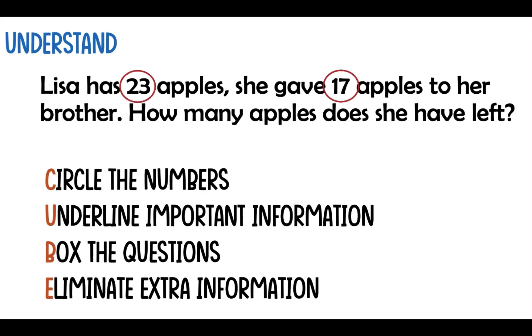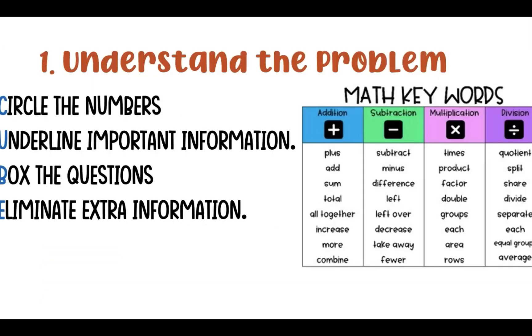Circle the numbers, we are going to circle 23 and 17. We are going to underline important information, left. Why left? Because left is a keyword. If I take a look at this chart, I can see that left is right here. So, this means I have to subtract the numbers.